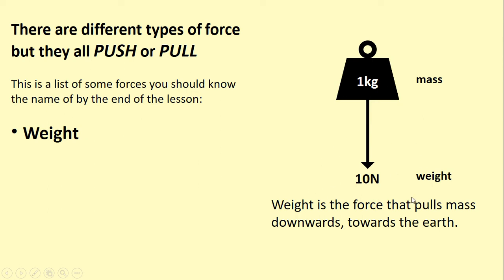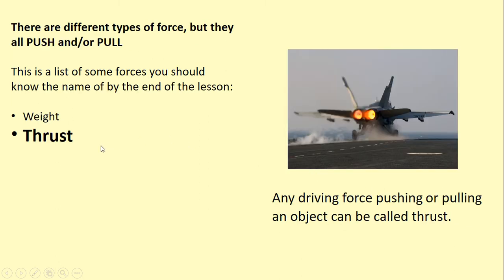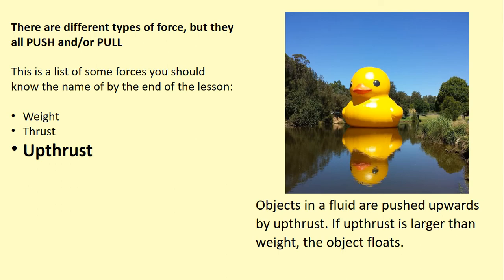Weight is the force that pulls mass downwards towards earth. One kilogram is the mass, 10 newtons is the weight, that is the force. Thrust is any driving force that pushes or pulls an object along, tends to be continuous. Upthrust is where objects in fluids are pushed up, all objects have some upthrust on them if they're in a fluid.